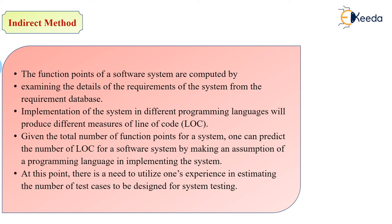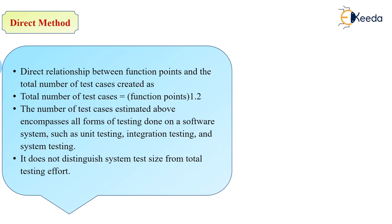In the direct method, there is a direct relationship between function points and total test cases. The formula is total test cases equals function points times 1.2. This estimation encompasses all forms of testing done on a software system, such as unit testing, integration testing, and system testing. It does not distinguish system test size from total testing efforts. I hope you have understood the estimation models using function points and LOC.